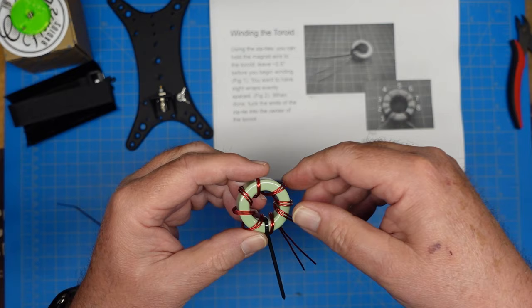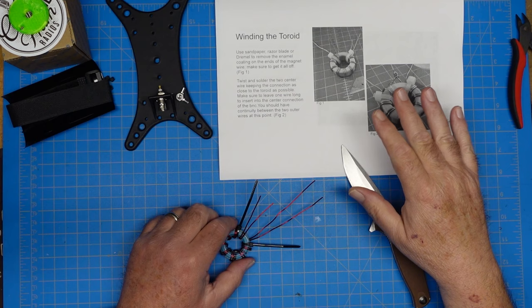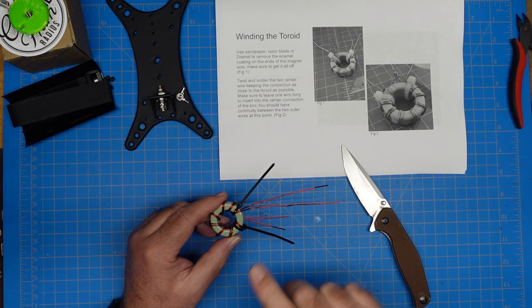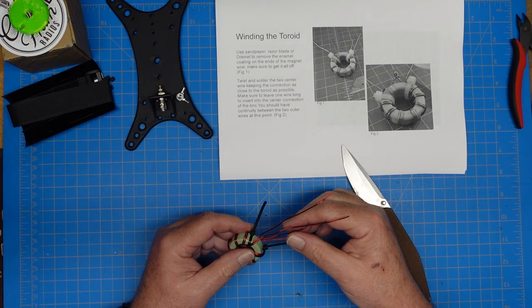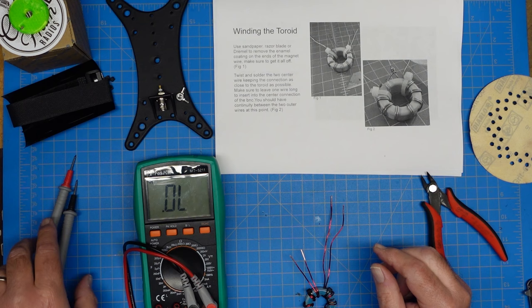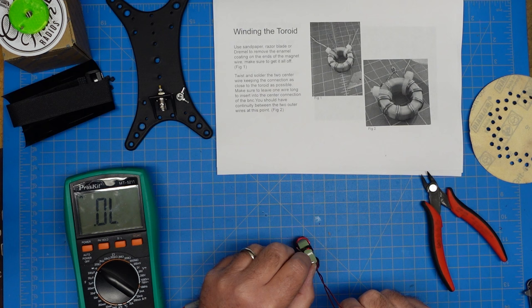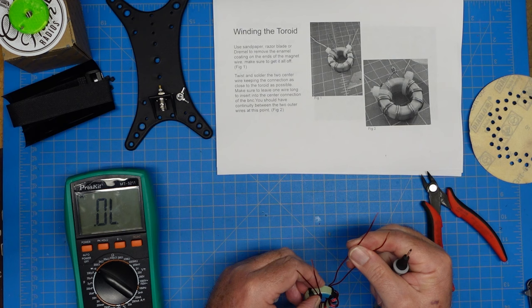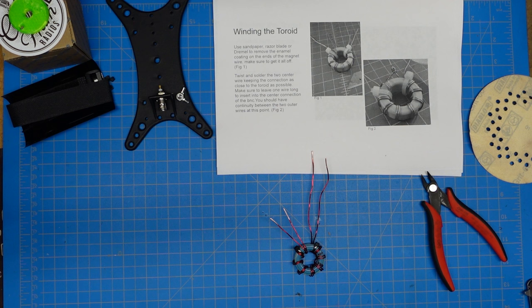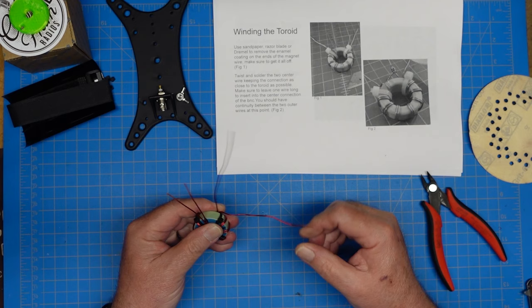We've got our wrap finished. We have one, two, three, four, five, six, seven, eight turns through. That completes our wrap. Next we need to scrape the enamel off wires and connect the two center wires together per the picture. If I didn't get my wires crossed, we should have continuity between the outer two wires.